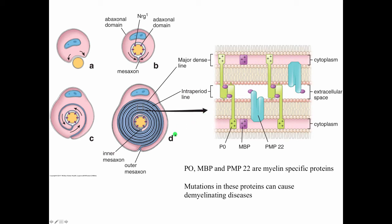As the mesaxon wraps around the axon, the Schwann cell cytoplasm is being squeezed out between membranes of the Schwann cell. The little bit of cytoplasm between the Schwann cell membranes contributes to what's called the major dense line, shown as dense black lines in the cartoon. The interperiod line is the extracellular space between those membranes as they coil around the axon.